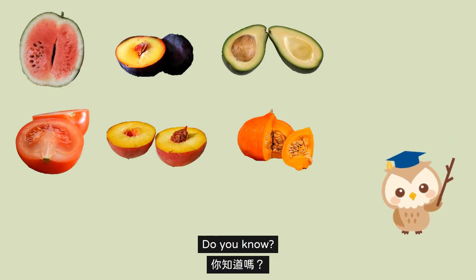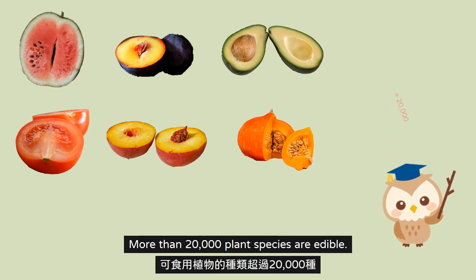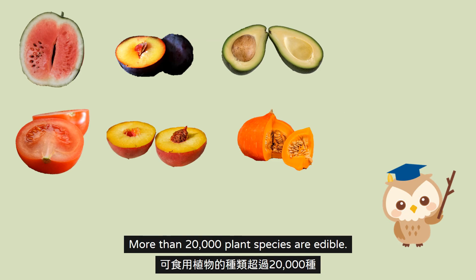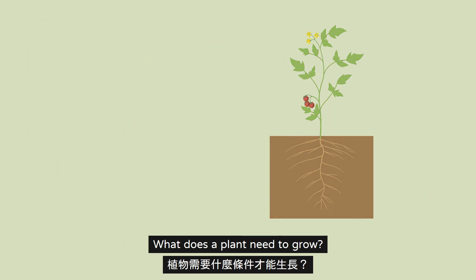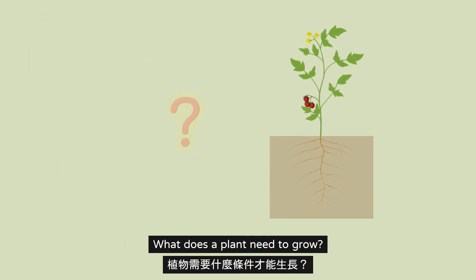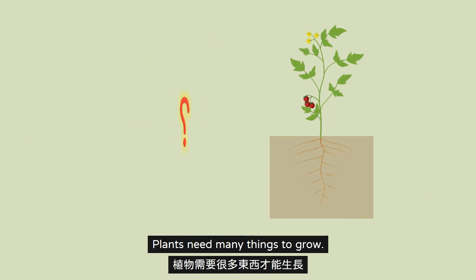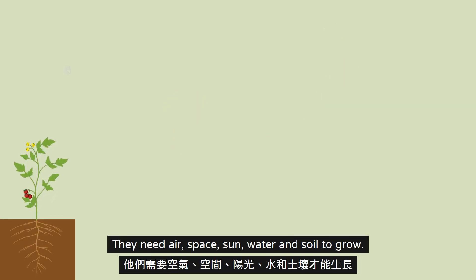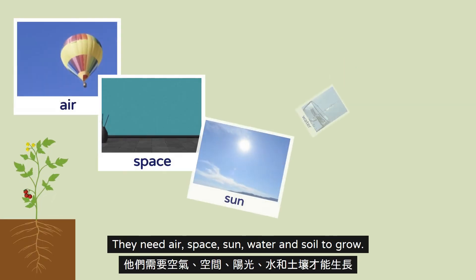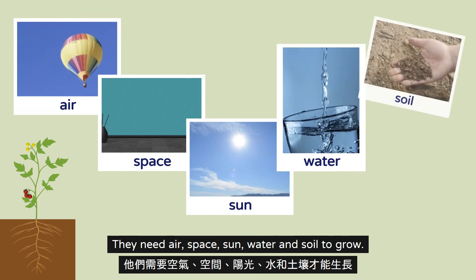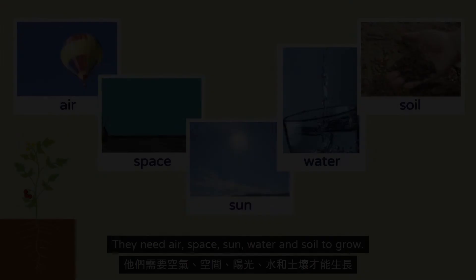Do you know? More than 20,000 plant species are edible. What does a plant need to grow? Plants need many things to grow. They need air, space, sun, water and soil to grow.